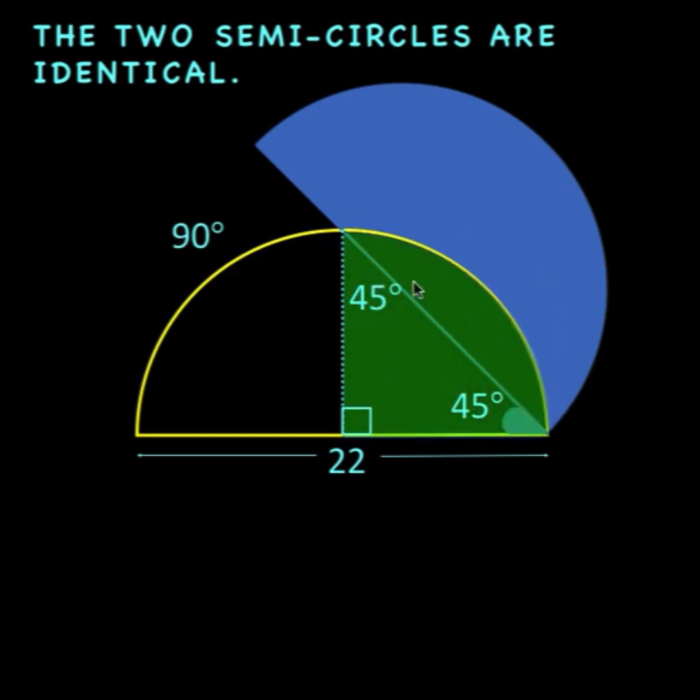And so clearly, what we have here is a quarter circle. And since we have a quarter circle, then the radius now of this semicircle must be half this 22. The radius is 11.